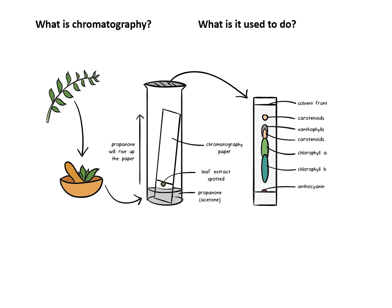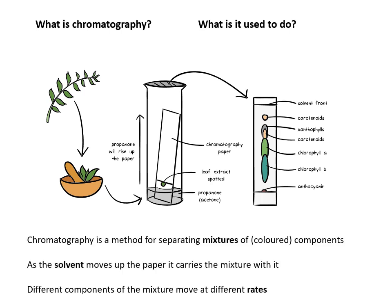Then you put it in some water or another liquid, and the water soaks up the paper and carries the ink or the different colors with it. It separates them because the different components of the mixture are soaked up at different rates — they travel up the paper at different rates and so they are separated. You can use this to identify the components of a mixture.